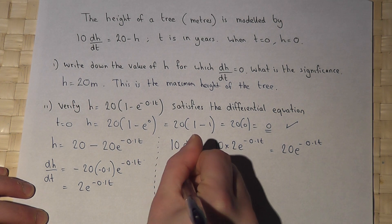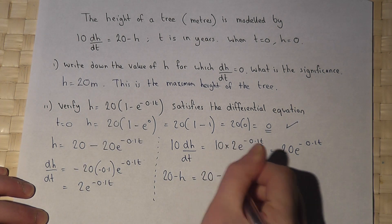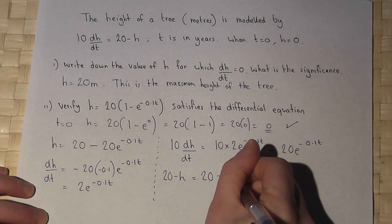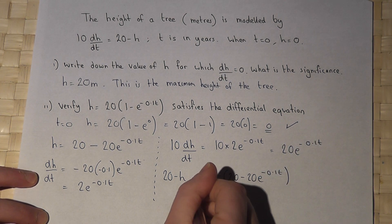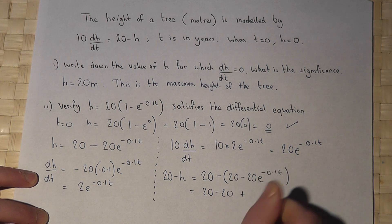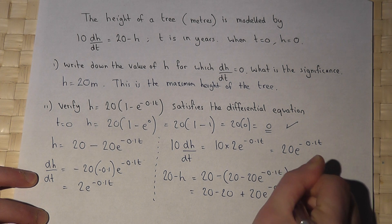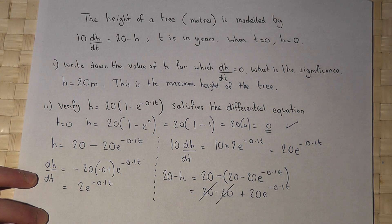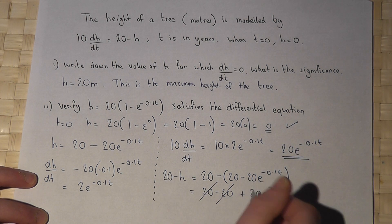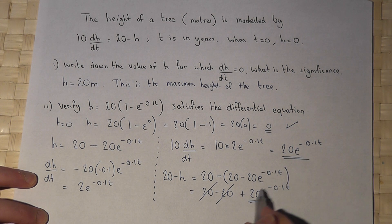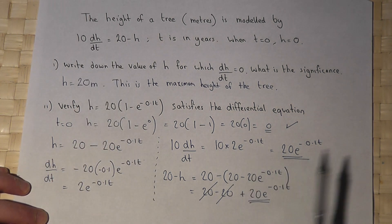which is 20e to the minus 0.1t. So the left-hand side equals 20e to the minus 0.1 times t. But 20 minus h, if this is correct, is 20 minus 20e to the minus 0.1t, which equals 20 minus 20e to the minus 0.1t. They cancel out. So 10 dh by dt equals this. 20 minus h equals this. They are the same. So therefore, this is indeed a solution to the given differential equation.